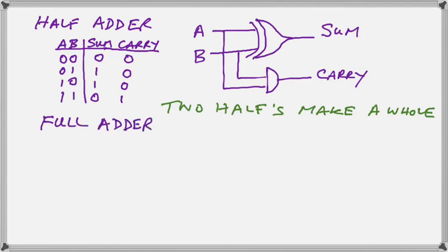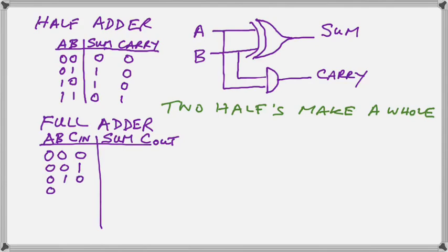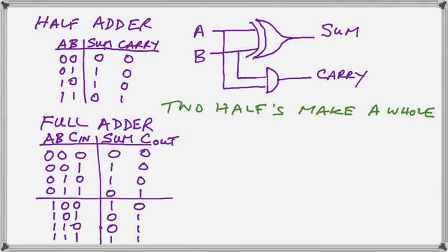Now the truth table for the full adder, the first half of it is the same as the half adder. And the second half of it at the bottom shows that we have in the carry an OR function taking place. Notice that we have divided our table into two.